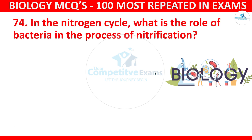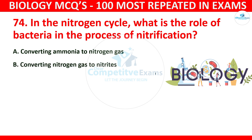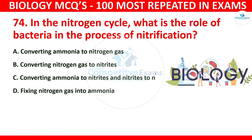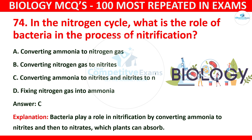Question number 74: In the nitrogen cycle, what is the role of bacteria in the process of nitrification? The options are converting ammonia to nitrogen gas, converting nitrogen gas to nitrates, converting ammonia to nitrites and nitrites to nitrates, or fixing nitrogen gas into ammonia. The correct answer is C: converting ammonia to nitrites and nitrites to nitrates. Bacteria play a role in nitrification by converting ammonia to nitrites and then to nitrates, which plants can absorb.